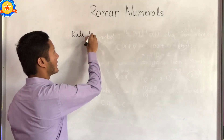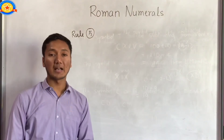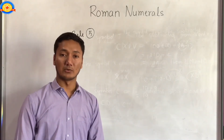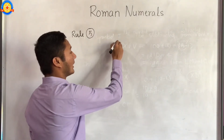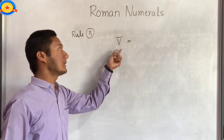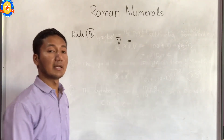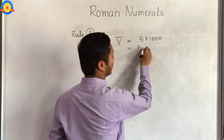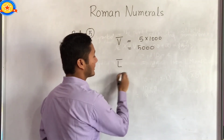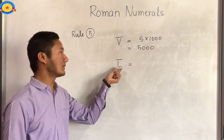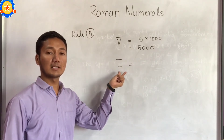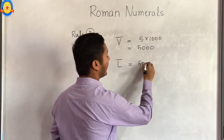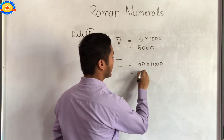Rule number 5: if a bar is placed over a numeral, then that numeral is multiplied by 1000. For example, if a bar is placed over V, then it becomes 5 multiplied by 1000, which equals 5000. Similarly, if a bar is placed over L, it becomes 50 multiplied by 1000, which equals 50000.